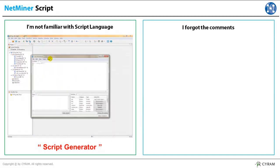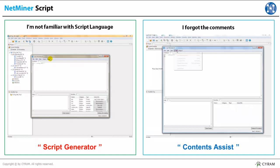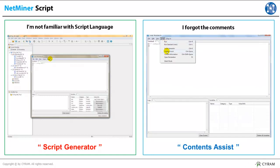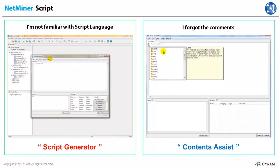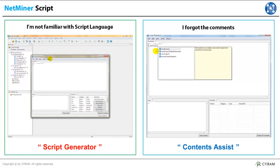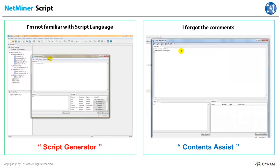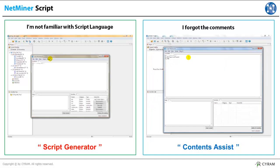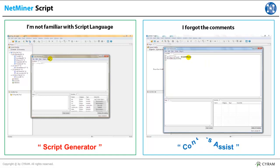There are times that even expert users forget script commands when writing script files. In this case, content assist is the answer to this problem. By using content assist, you can find all the script commands easily and see detailed explanations about each one. While creating a script, push Ctrl and Space, then content assist will be enabled, greatly helping you to create awesome scripts.